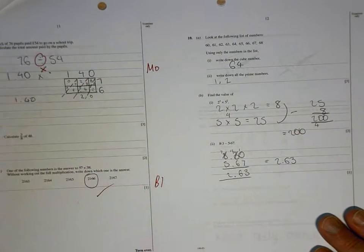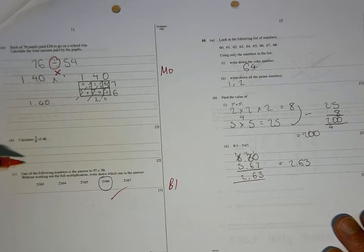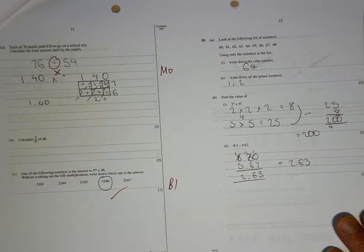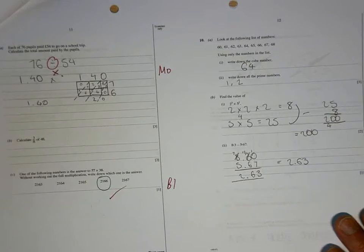That's right there. Again, this is something that I know you can do. You were doing these before Christmas. You find 1 eighth by doing 48 divided by 8, which is 6. And you need 3 eighths, so you need 3 lots of 6, which is 18.